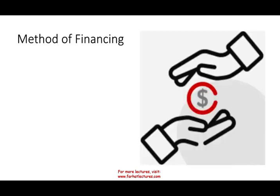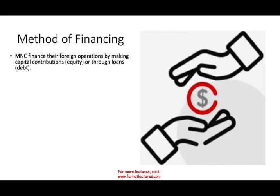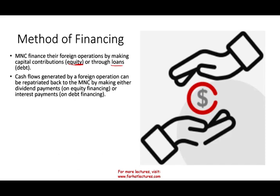The third factor is the method of financing — how are you going to get capital? Is it through equity by issuing stocks, or through loans, bonds, or debt? Cash flow generated by a foreign operation can be repatriated — sent back to the home country to the parent company — making either dividend payments or interest payments. So how you finance yourself determines how you repatriate that money.